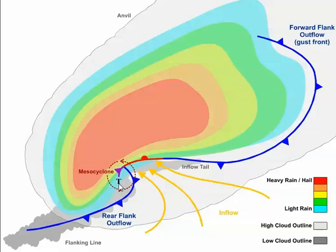So not all supercells are created equal, which sometimes makes them hard to spot with radar reflectivity. Fortunately, today meteorologists have Doppler radar with dual polarization capabilities to help them better identify supercells that may be spawning tornadoes.